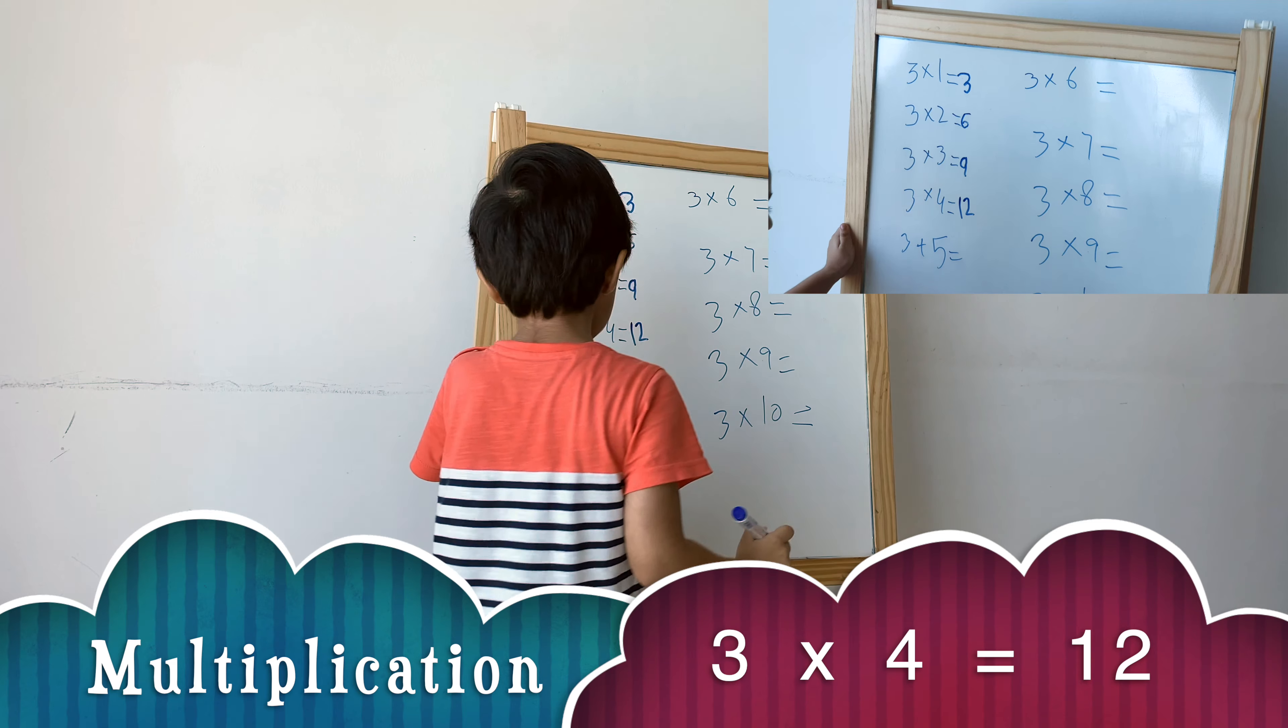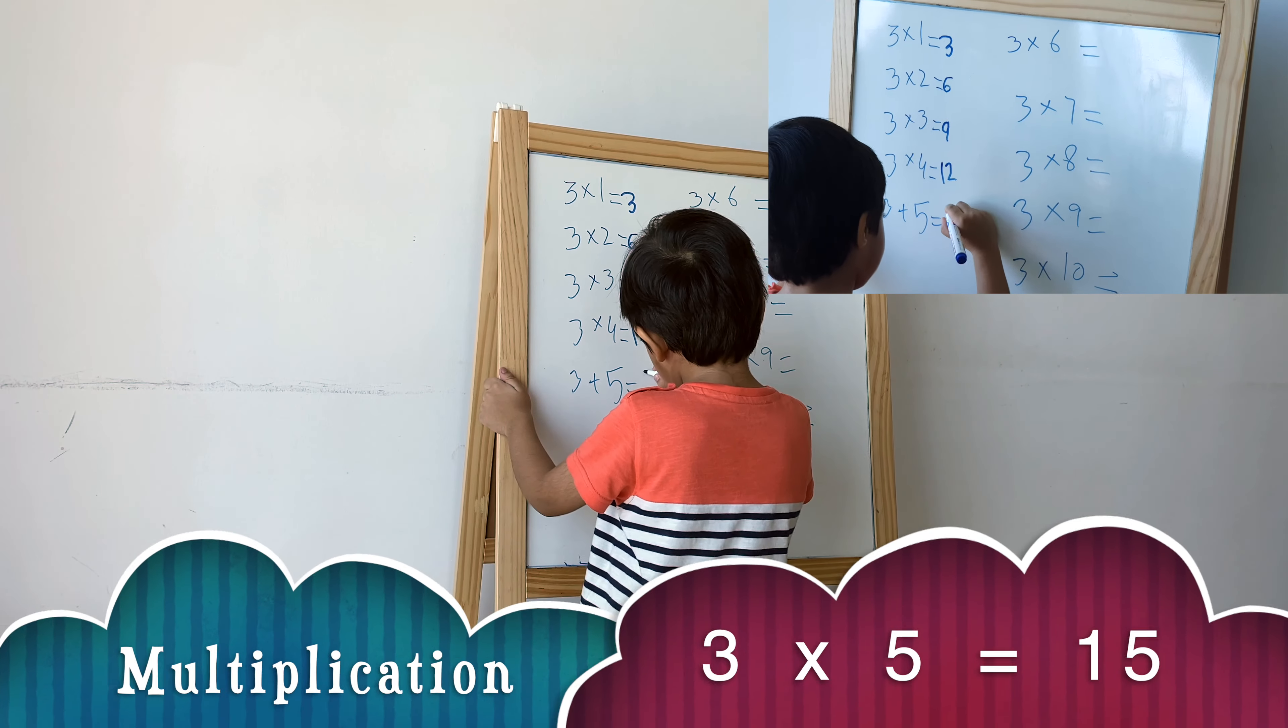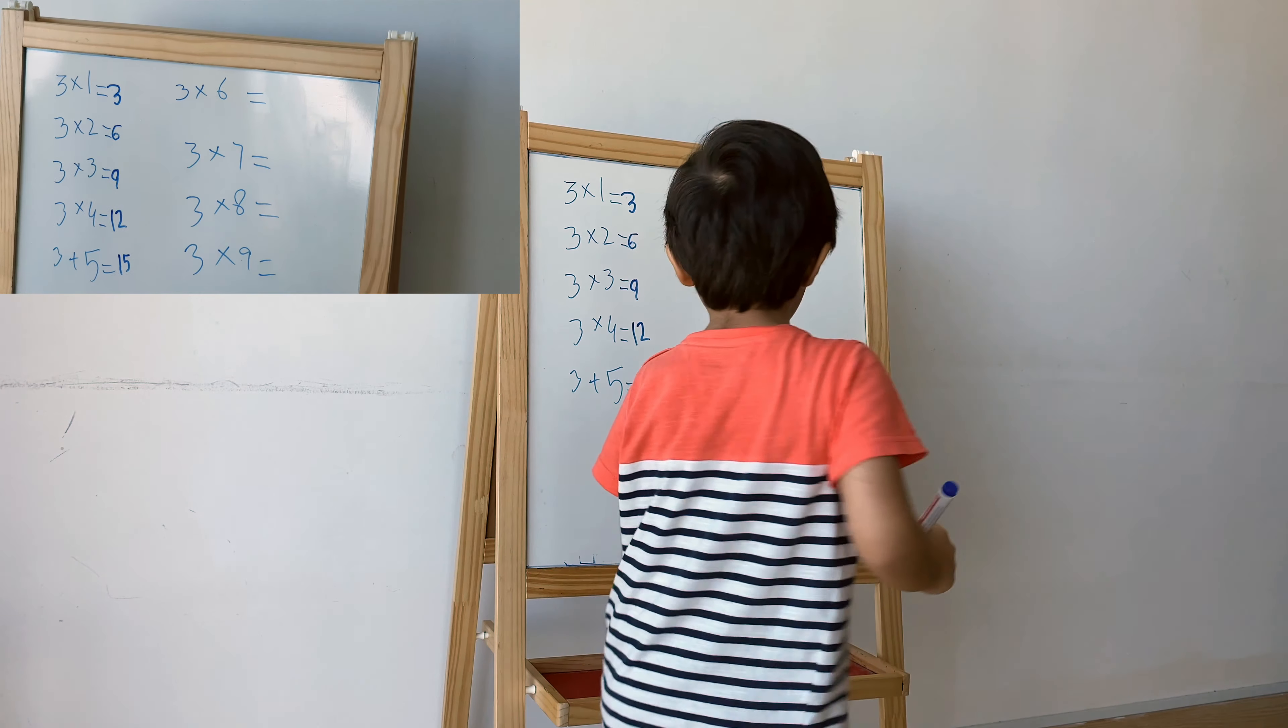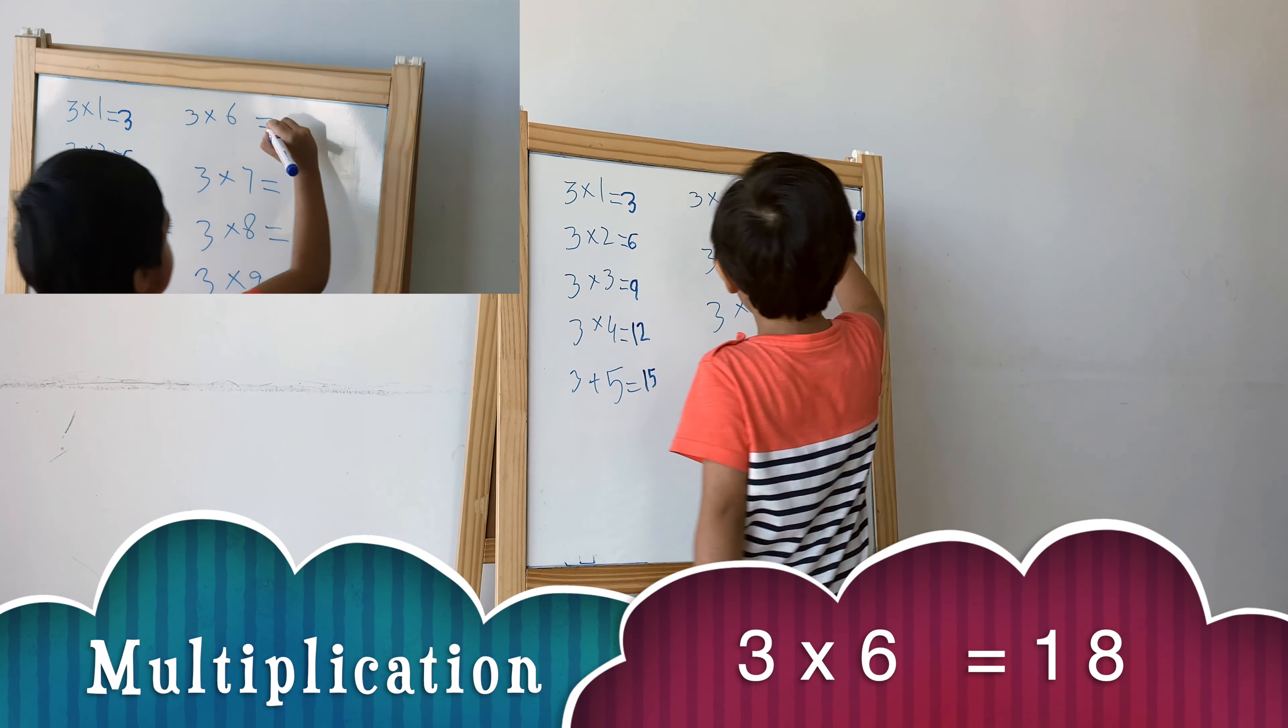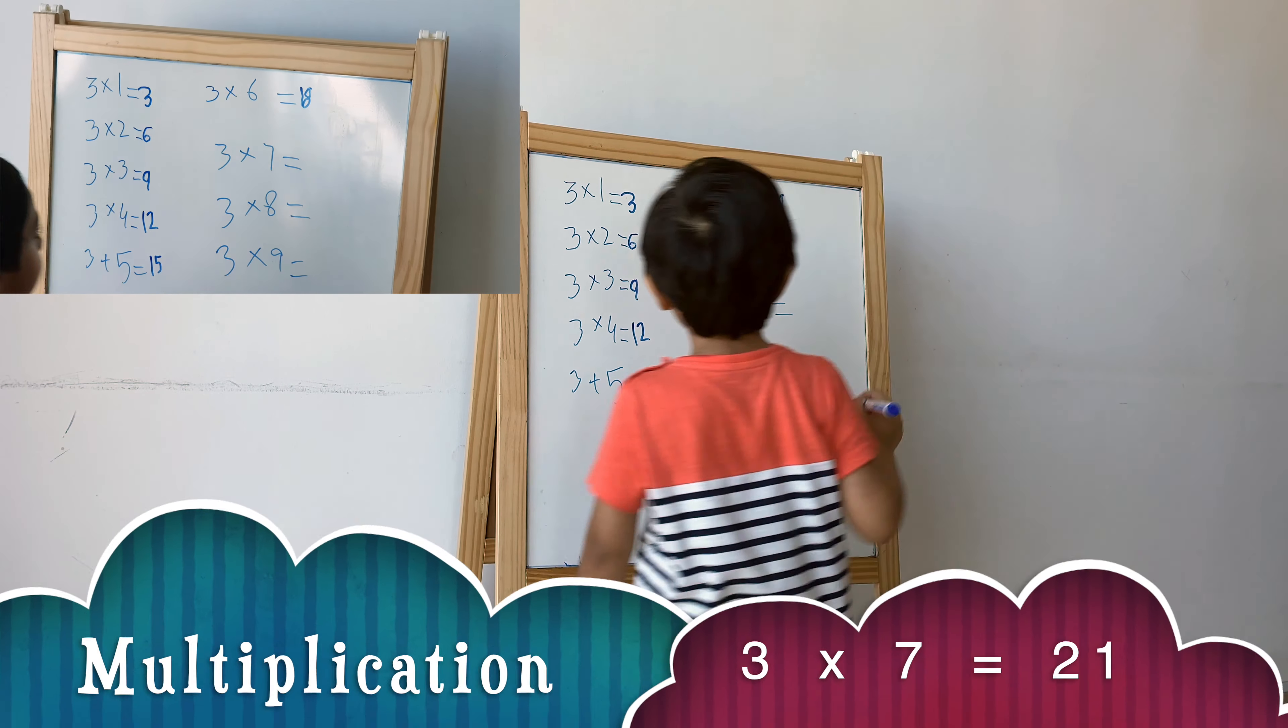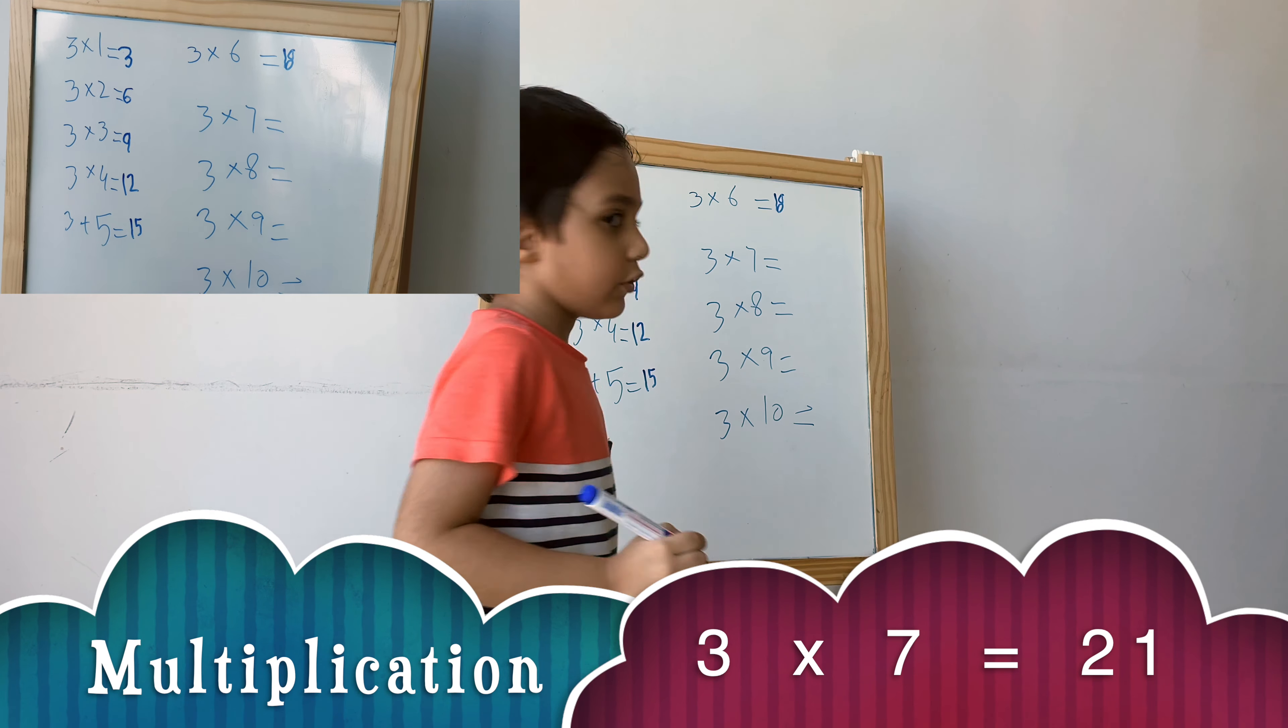3 multiplied by 5 equals 16. 3 multiplied by 6 equals 18. 3 multiplied by 7 equals 21.